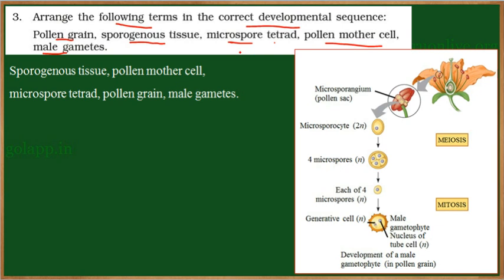We can see the entire process of microsporogenesis and formation of the male gamete. Microsporogenesis occurs in the pollen sac and forms from the microsporocyte, which is diploid in nature. This undergoes meiotic division giving rise to four microspores. Each microspore is functional; they undergo mitotic division and give rise to the male gametophyte. So we have to arrange both gametogenesis and sporogenesis in sequential order.